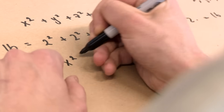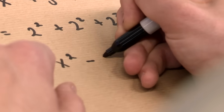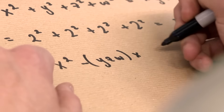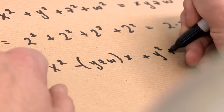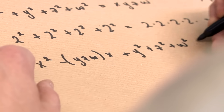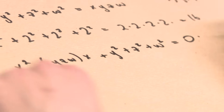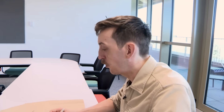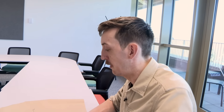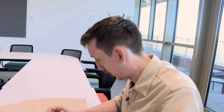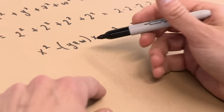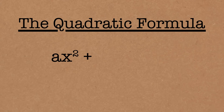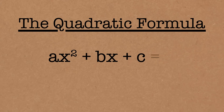Even though there are four things multiplied together here, there are only ever two x's multiplied together. So let's rearrange things to view this as a quadratic equation in x. We write it as x squared minus y·z·w times x plus y squared plus z squared plus w squared equals zero. That's just a standard rearrangement of what we had before, but written in a form that makes it obviously a quadratic equation in x.